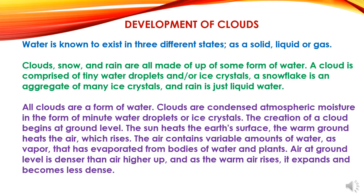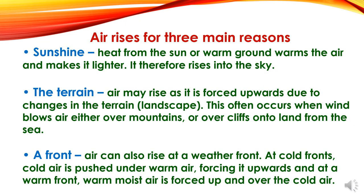The creation of a cloud begins at ground level. The sun heats the Earth's surface, the warm ground heats the air which rises. The air contains variable amounts of water vapor that has evaporated from bodies of water and plants. Air at ground level is denser than air higher up, and as the warm air rises, it expands and becomes less dense. Air rises for three main reasons. First is sunshine: heat from the sun or warm ground warms the air and makes it lighter, so it rises into the sky.